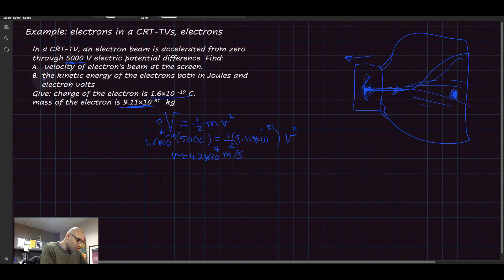Now let's see part two. Let's find the kinetic energy of the electrons both in joules and in electron volts. The reason we want to do that is as practice—we already found the velocity.